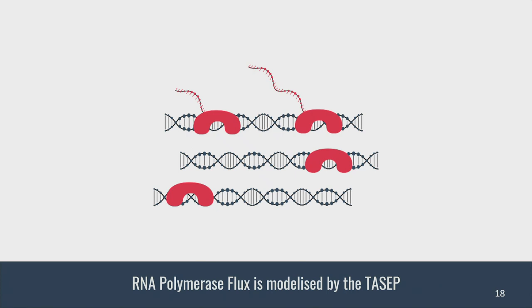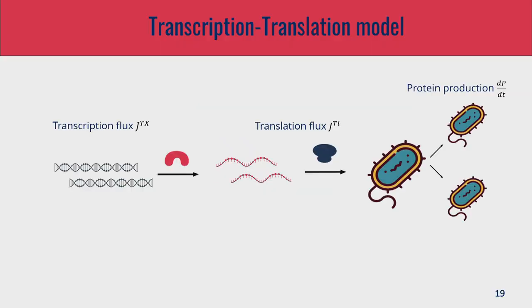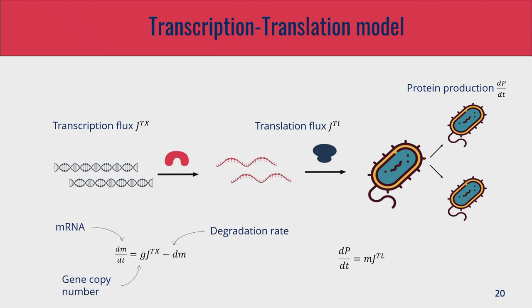We get the model for the translation process, and we do the exact same for the transcription process. The lattices are DNA, the particles are RNA polymerase, but nothing changes. We have the same model and can find the fluxes depending on your amount of ribosomes and the parameters — initiation rate, elongation rate of DNA and mRNA. This gives a very simple gene expression model where you see the evolution of mRNA depending on gene copy number, transcription flux, and degradation, as well as the production of proteins depending on the mRNA and translation flux.